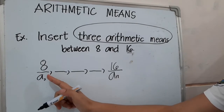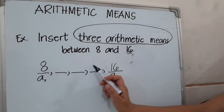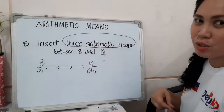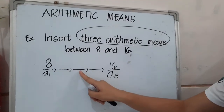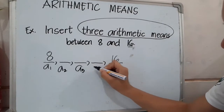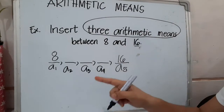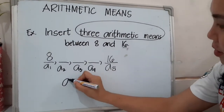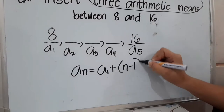If you notice, we already have how many terms: this is our first term, second term, third term, fourth term, fifth term — so this will be our fifth term. Based on this situation, we will be looking for the second, third, and fourth terms. We will be using our formula: a sub n equals a sub 1 plus n minus 1 times d.